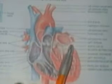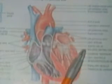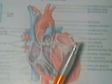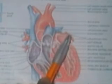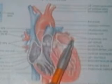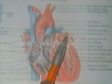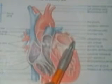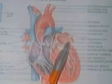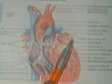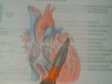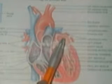The blood comes back to the left side of the heart by the left pulmonary veins. These are the left pulmonary veins, and they're called the pulmonary veins because they're bringing blood into the heart, towards the heart. The left pulmonary veins take the blood into the left atrium.